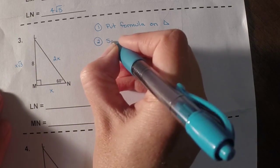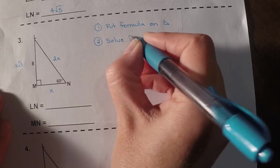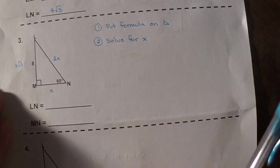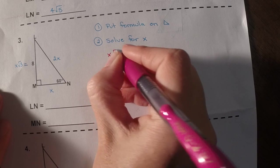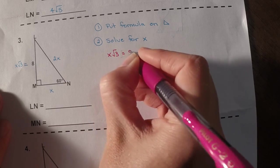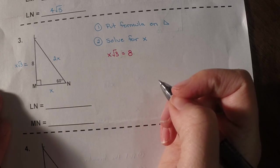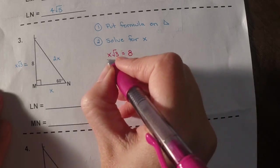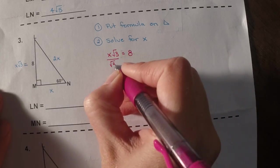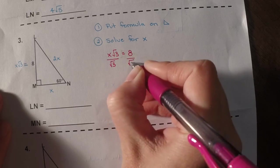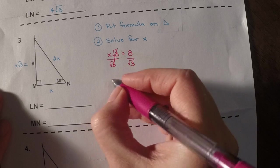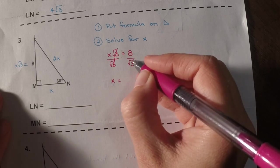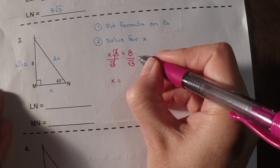Step 2 is to solve for x. So again, I look for my setup. Here it is. So here, I've got x root 3 equals 8. Well, just like on the front, we do have to divide. So I would have to divide by the square root of 3. So now, I do have x equals, but I don't have an answer. So I've got to rationalize the denominator.